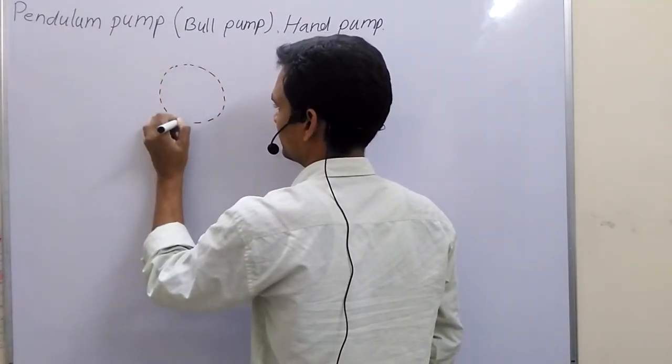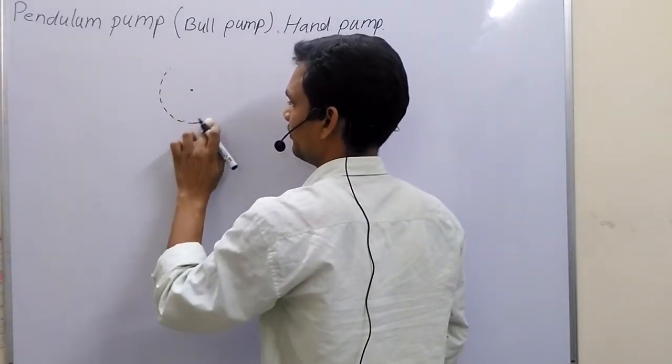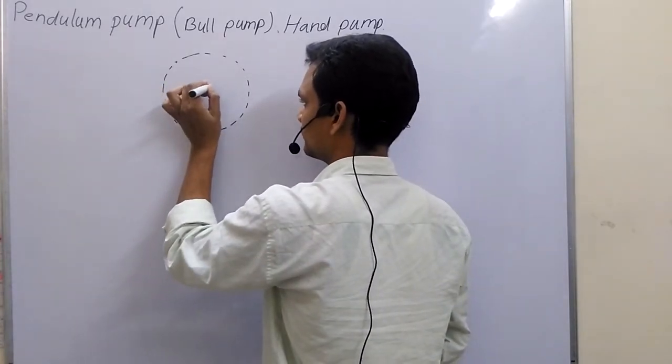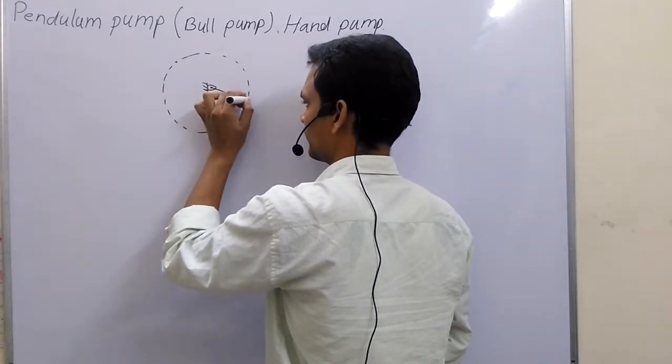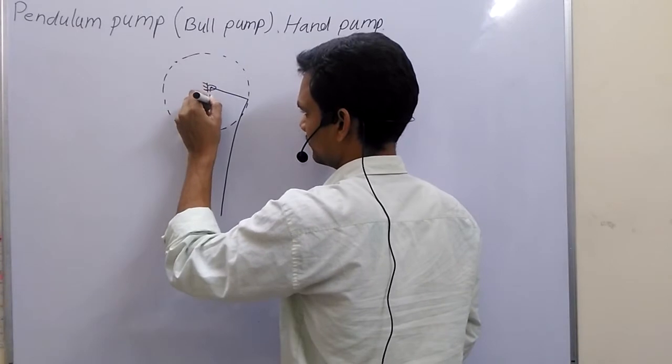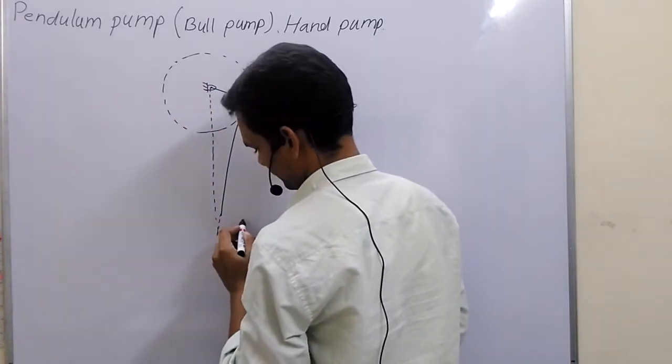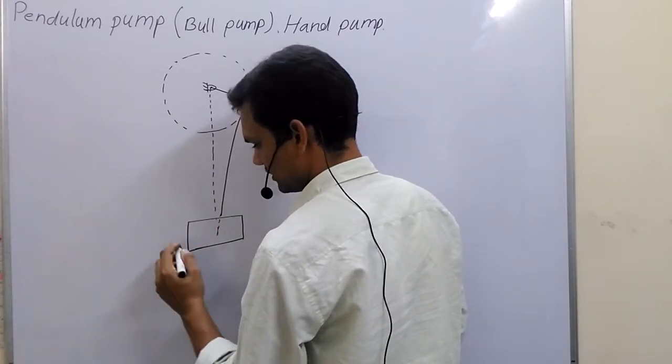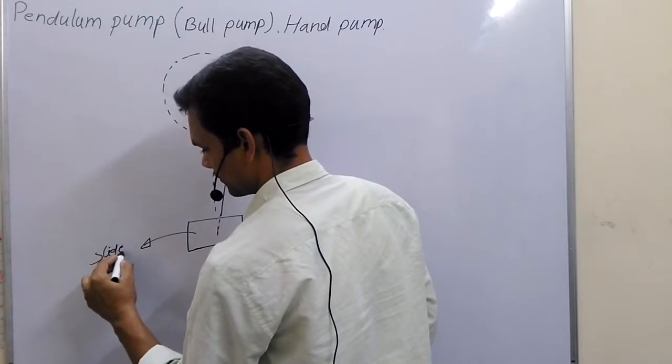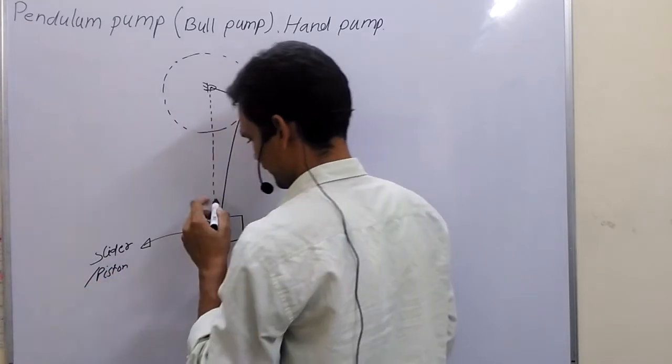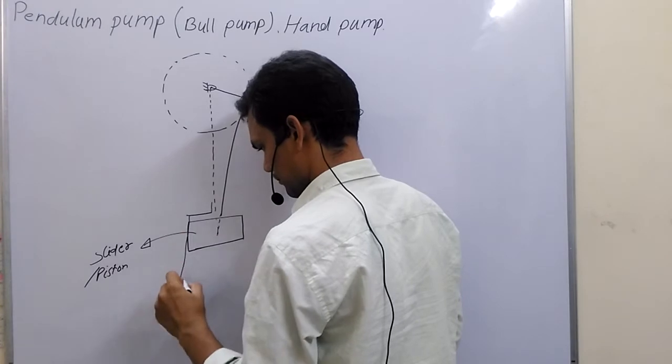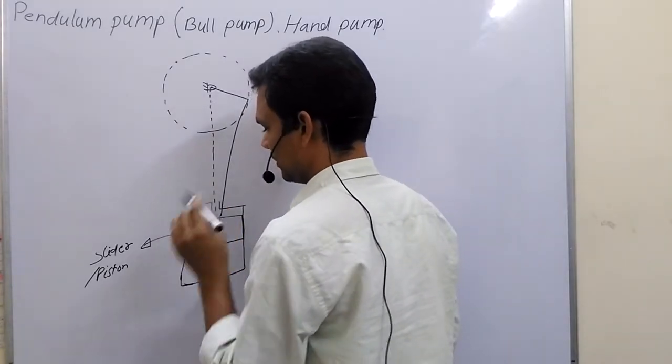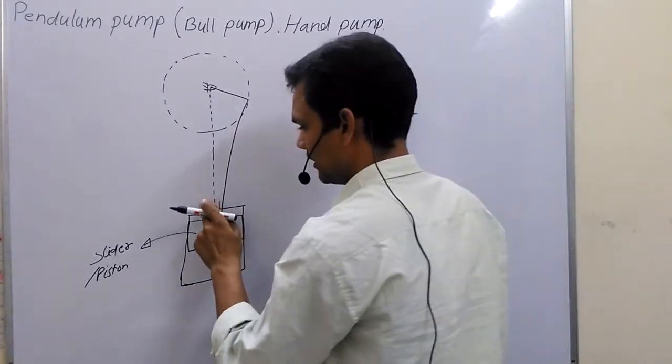Suppose this is crank. I will draw bigger crank. This is crank. This is our slider. This is our slider. It is very basic model of our single slider crank mechanism.